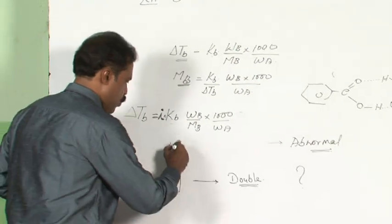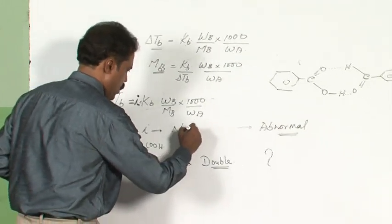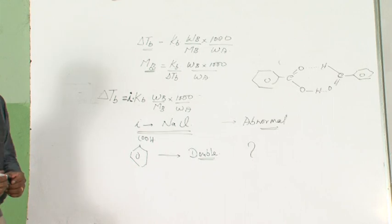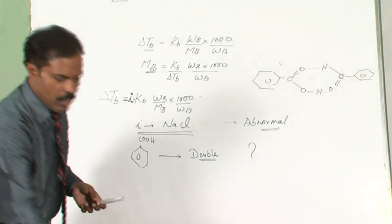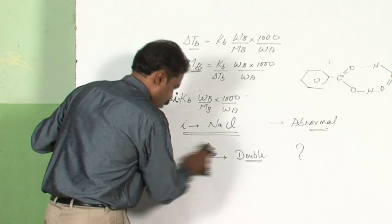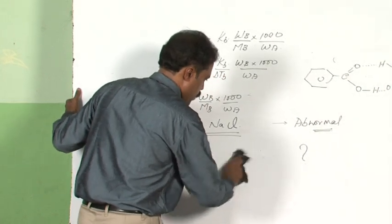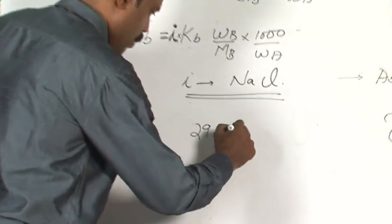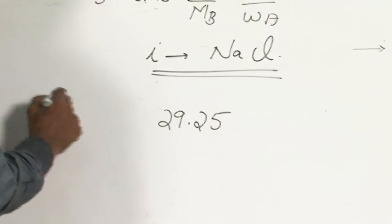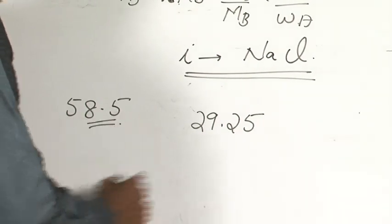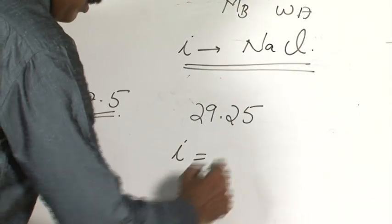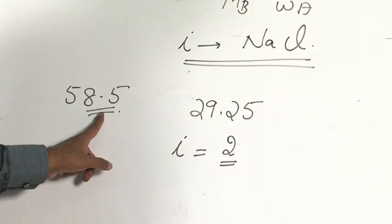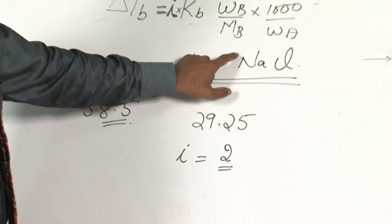What will be the value of i in the case of sodium chloride? The molecular weight calculated by colligative property for sodium chloride was 29.25, which is half of the actual molecular weight of 58.5. Therefore, i for sodium chloride has to be 2, because the molecular weight has to be doubled to get the actual molecular weight. So the i value for sodium chloride is 2.